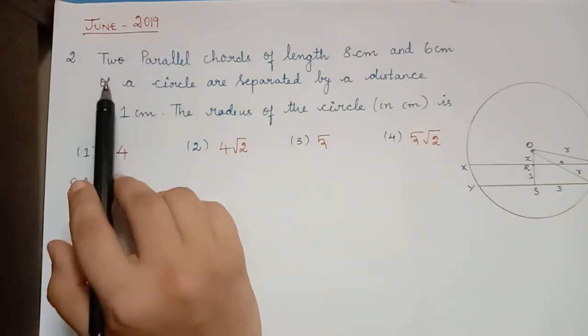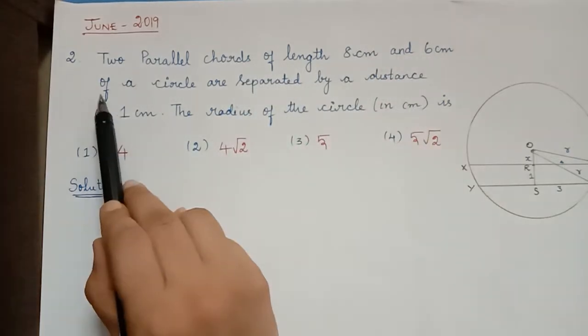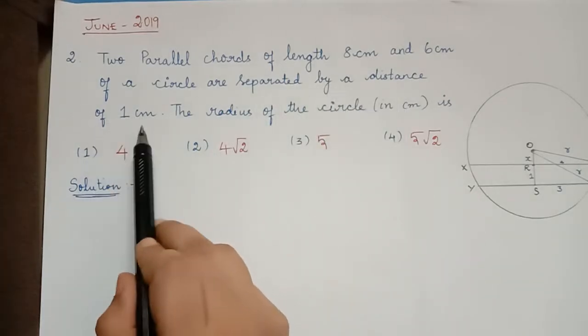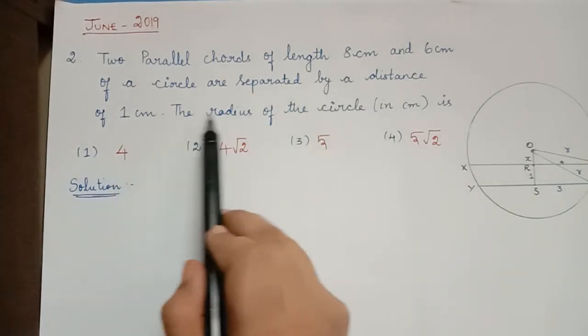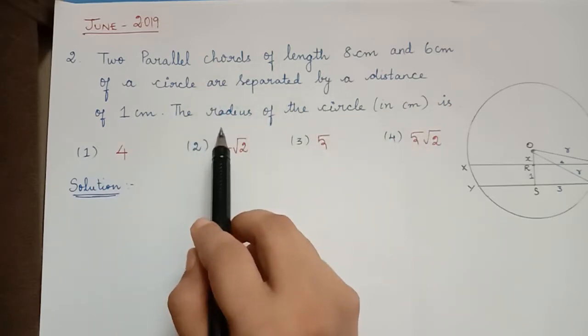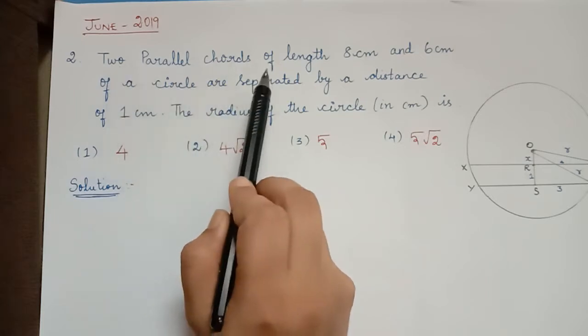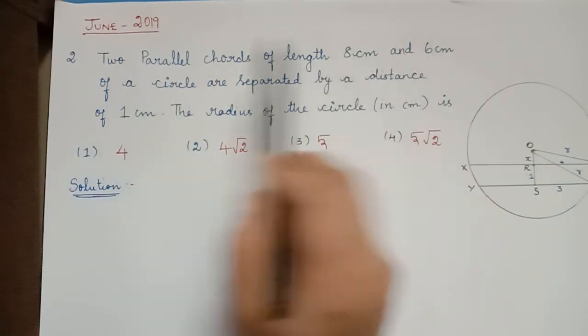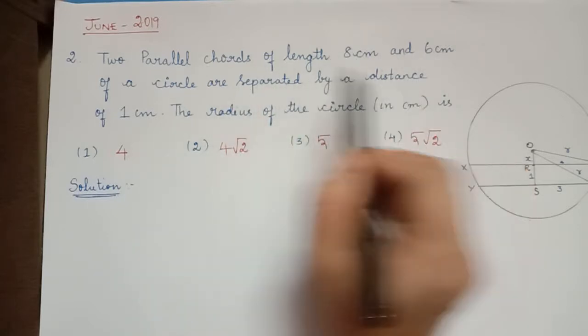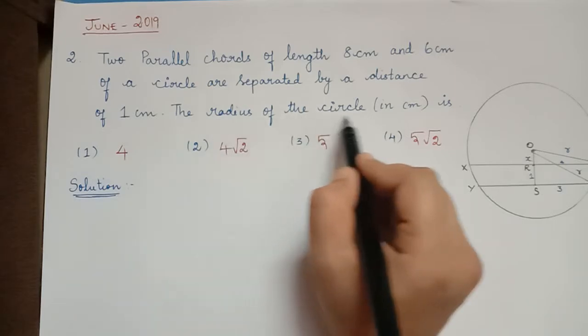The question is: two parallel chords of length 8 cm and 6 cm of a circle are separated by a distance of 1 cm. Find the radius of the circle.